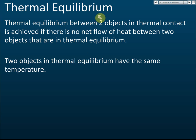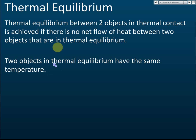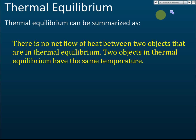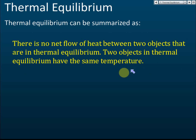Thermal equilibrium between two objects in thermal contact is achieved when there is no net flow of heat between them. This happens when the two objects have the same temperature. To summarize: there is no net flow of heat between two objects in thermal equilibrium, and two objects in thermal equilibrium have the same temperature. This is what you should write in your test or exam.